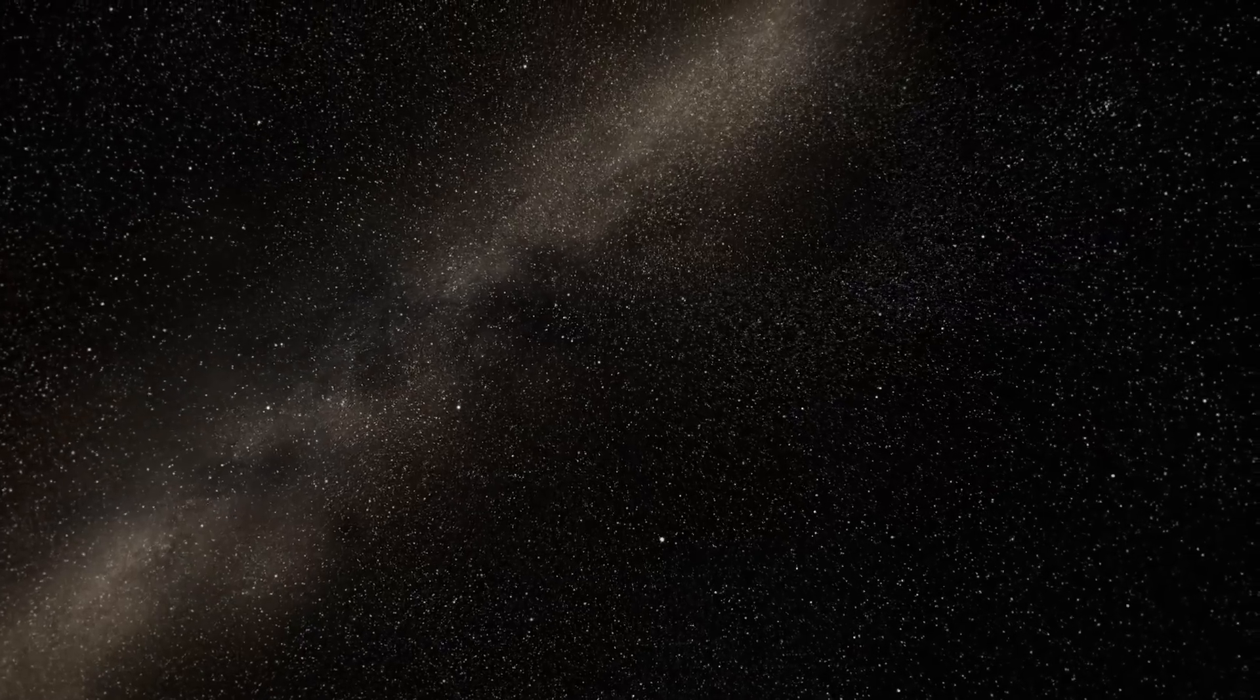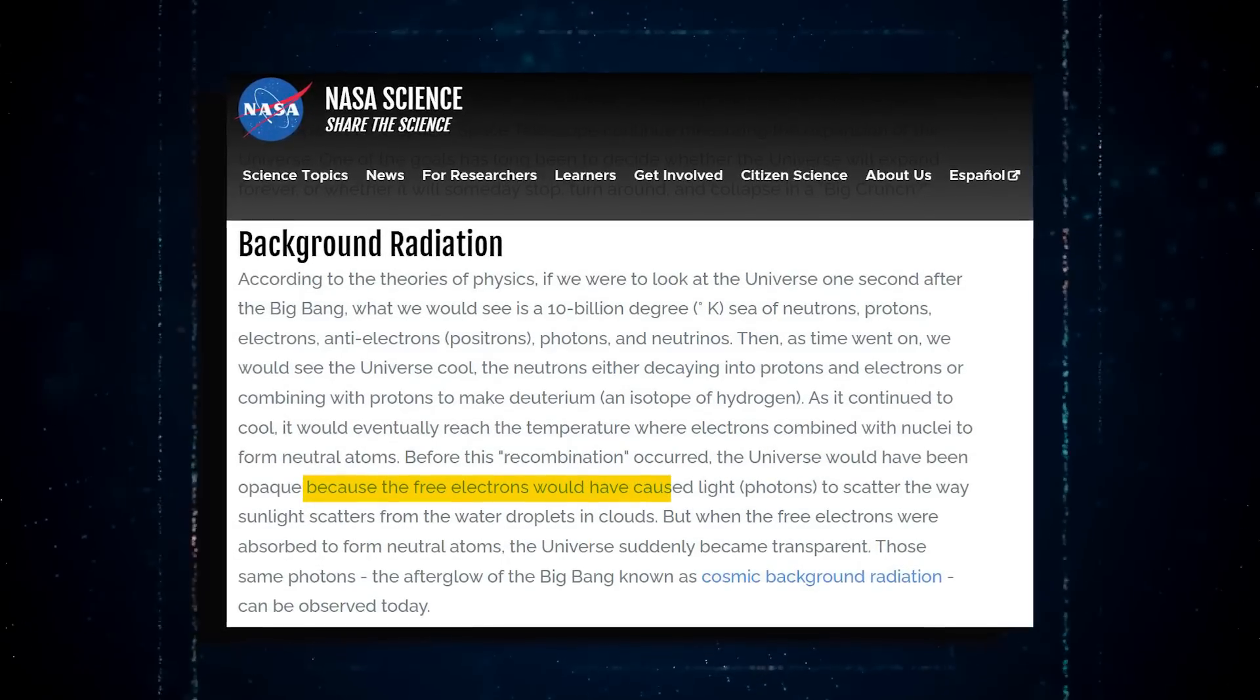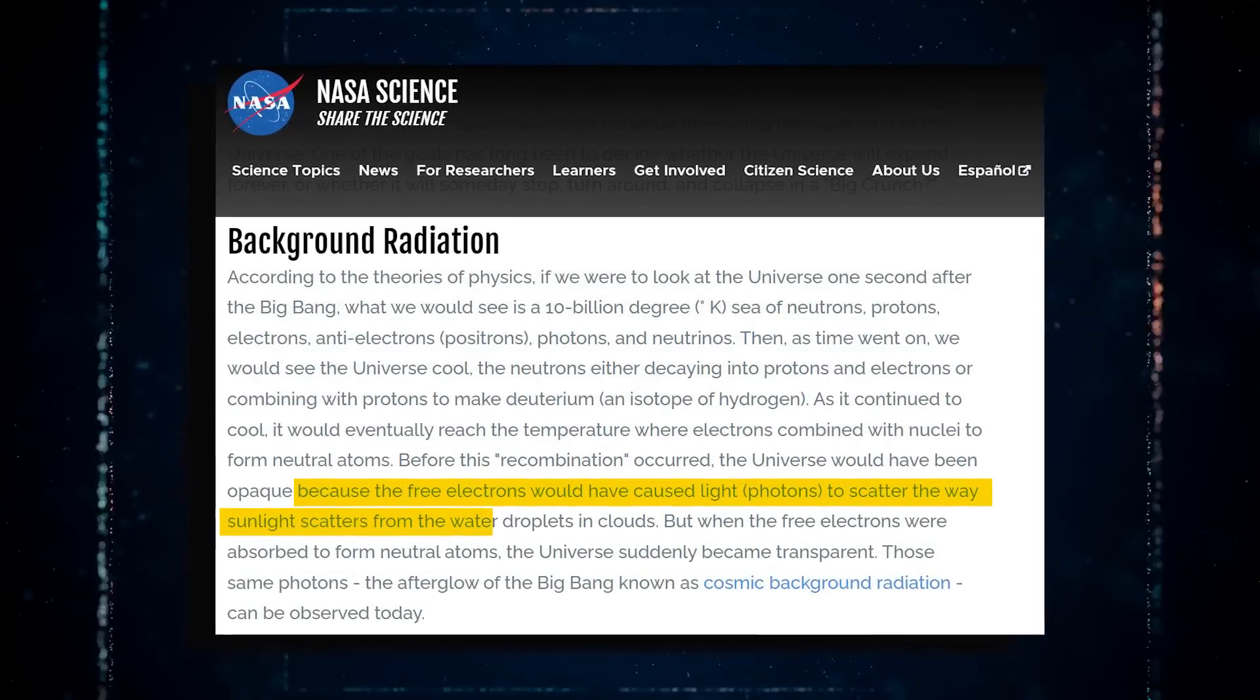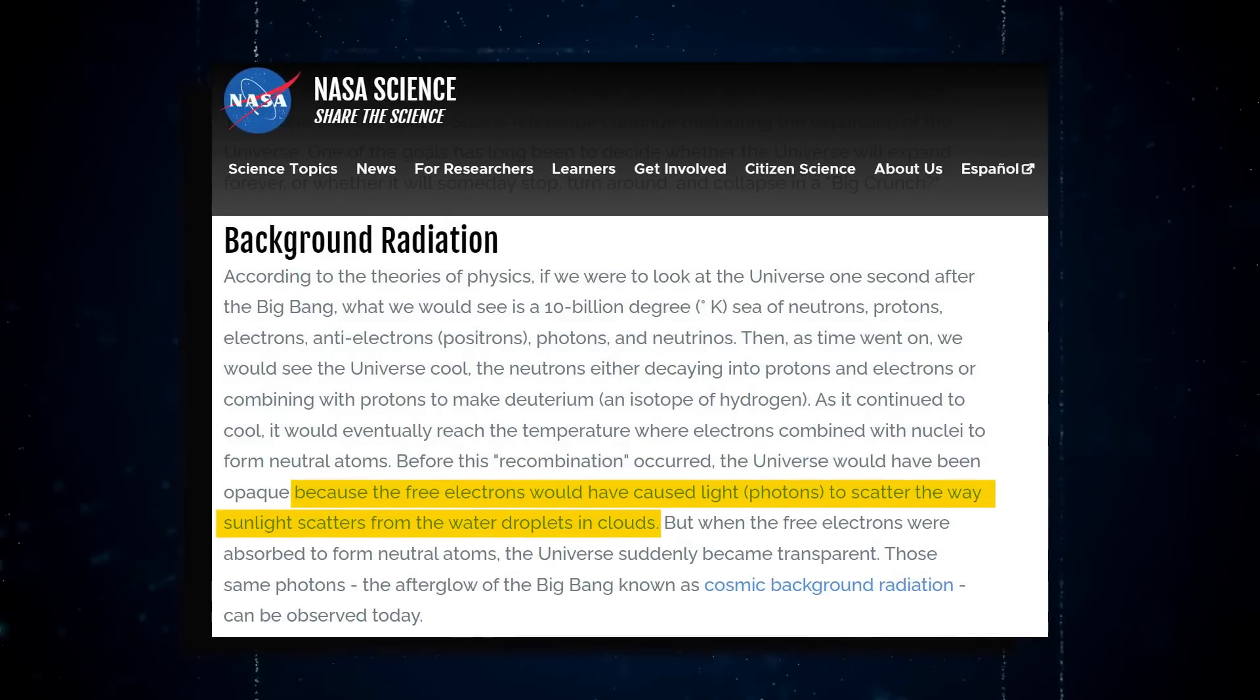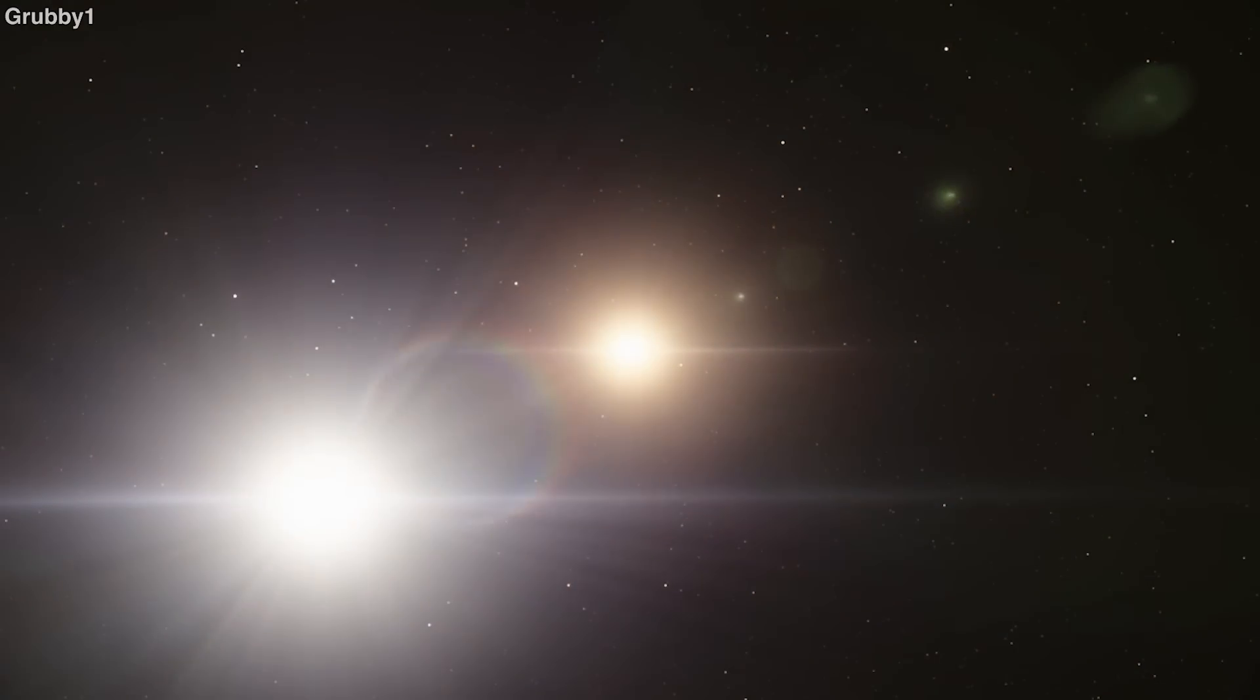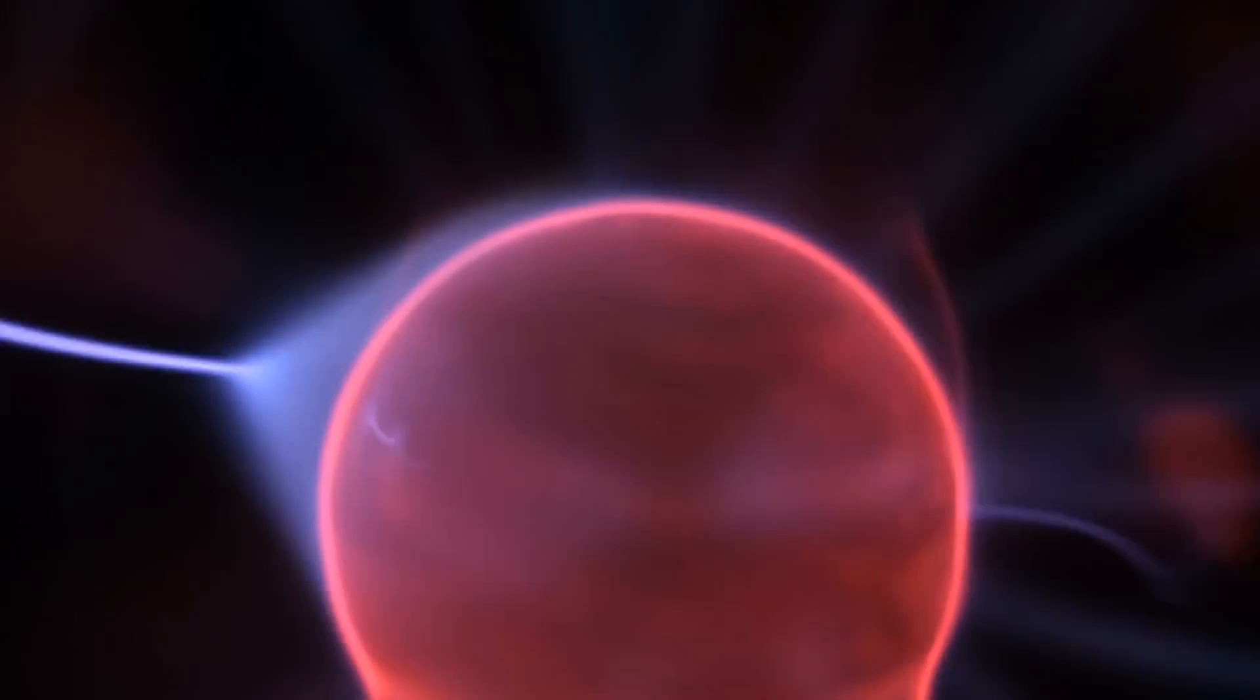Because it couldn't hold visible light, this early soup would have been difficult to perceive. According to NASA, the free electrons would have caused light photons to scatter the way sunlight scatters from water droplets in clouds. However, over time, these liberated electrons collided with nuclei, resulting in neutral atoms, or atoms with equal positive and negative electric charges.